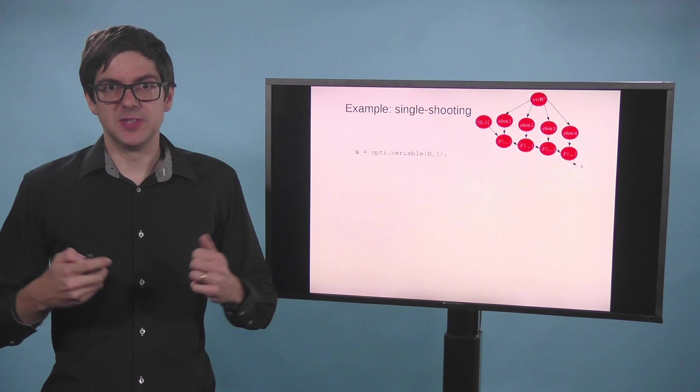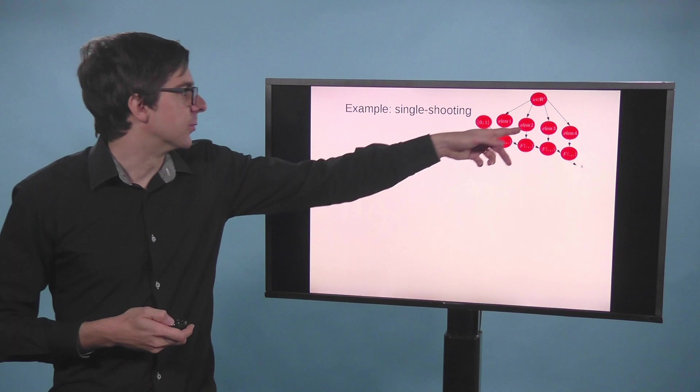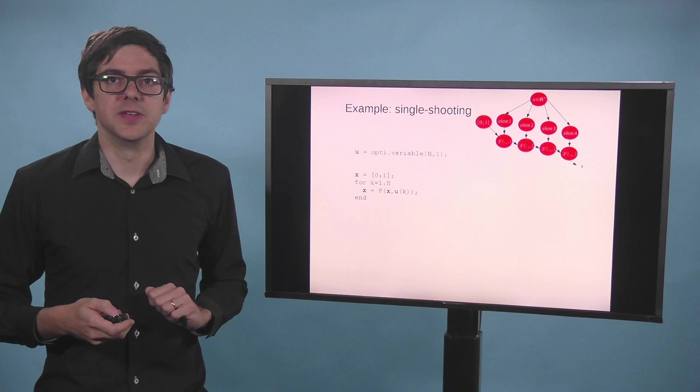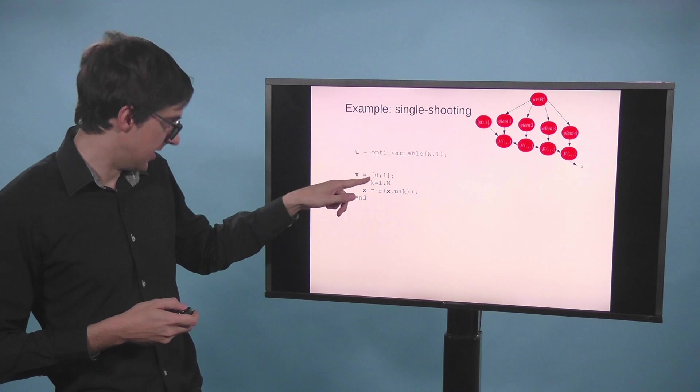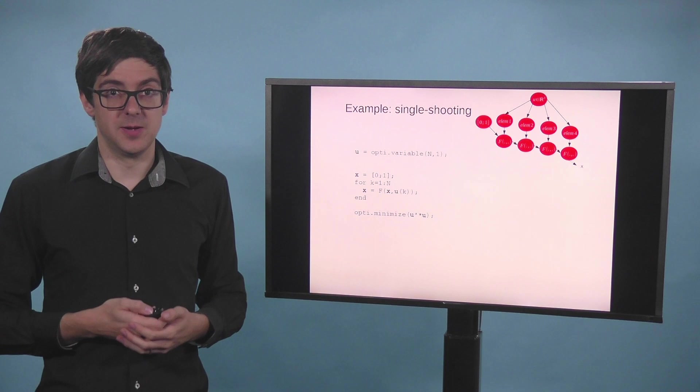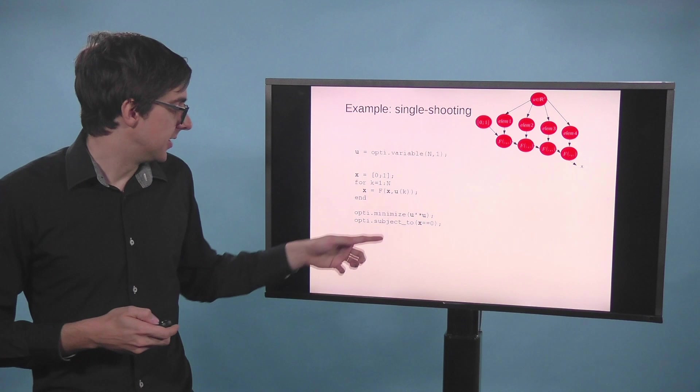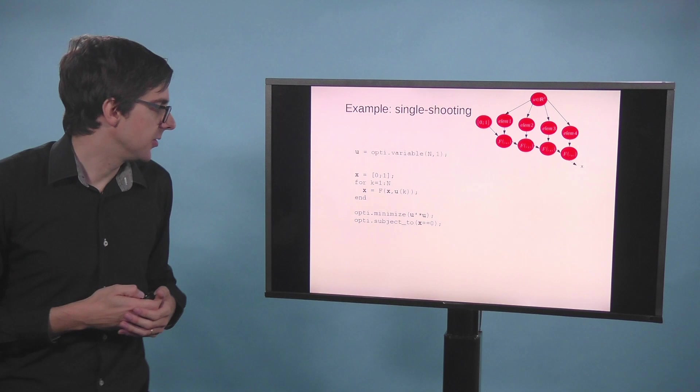So in terms of syntax, how would it look like? We start with declaring the variable for the controls. So it's a vector of n by 1, with n equals 4 in this case. Now we have a simple for loop to code all these guys at once. So we start out with the state 0, 1. And then update x as we go along forward in time. Then in the end, what do we want to do? Maybe we want to minimize the overall effort, the control effort. So I just put the objective to this guy. And then we constrain the state at the end to be 0.